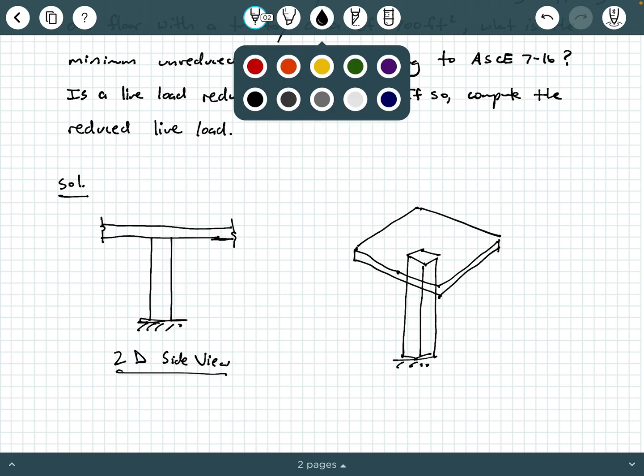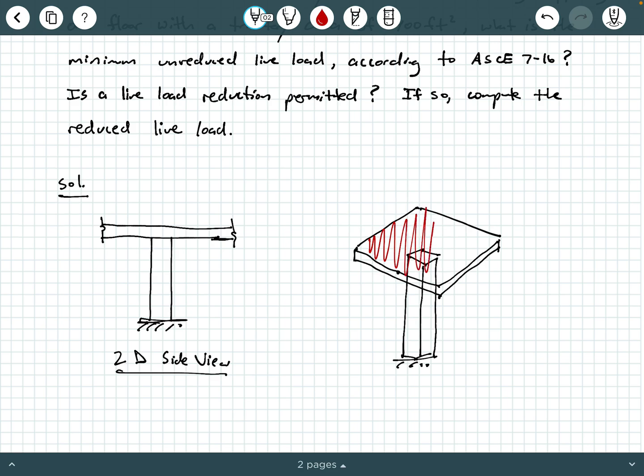So this 400 square feet represents the area that I'm shading here in red. This is the area, A sub T, tributary area, 400 square feet that this column is supporting.